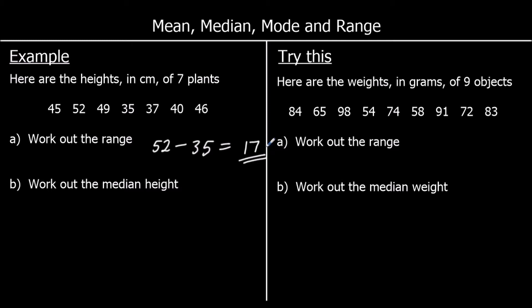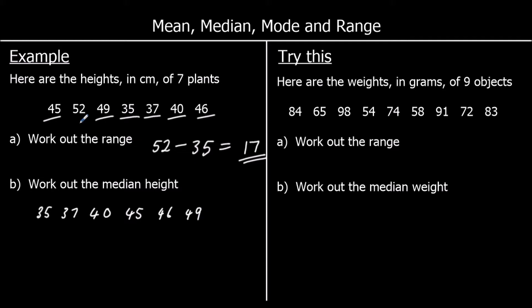Part B is asking for the median height. The median is a different type of average — it tells us the middle number. So we need to put them in order first: thirty-five, thirty-seven, forty, forty-five, forty-six, forty-nine, fifty-two. If we cross off three from each side, we can see the middle number is forty-five. So the median height is forty-five centimeters.